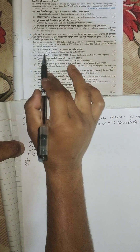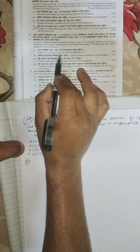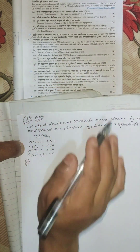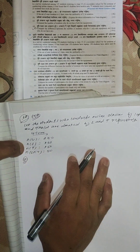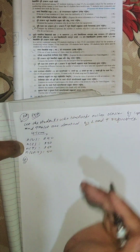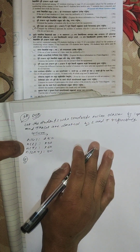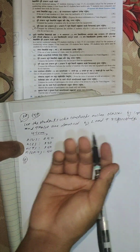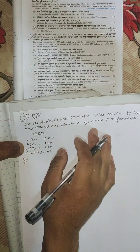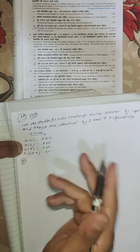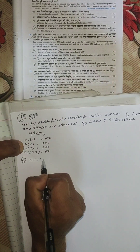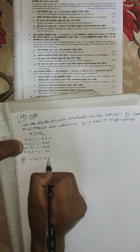If the set of total students is U, then the cardinality of U is simply the total number of students. The cardinality of U equals 250.